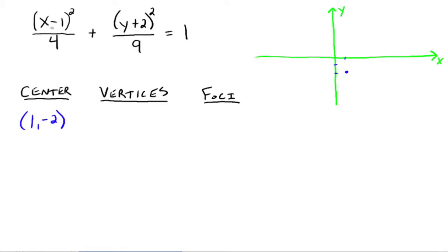Since 4 is under the x value, we go right and left the square root of 4 — so 2 units. Then up and down from the center, we go the square root of 9, which is 3. So we go up 3 and down 3. Those are our four points, and we can sketch the graph.